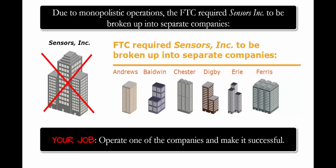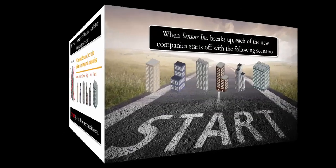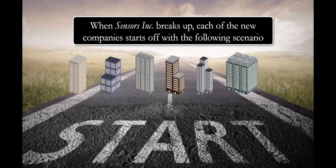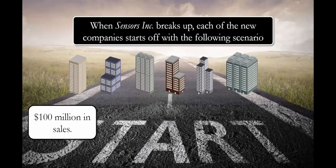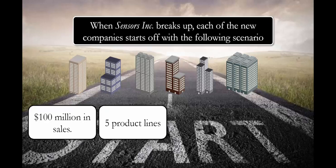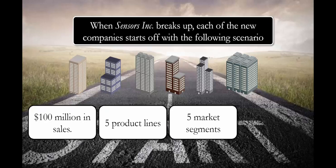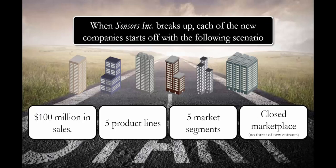It's going to be your job to operate one of these companies and make it successful. When Sensors Inc. breaks up, each of the new companies starts off with: a hundred million dollars in sales, five product lines, five market segments, and a closed marketplace. Since it is a closed marketplace, there is no threat of new entrants, but there is definitely a threat of substitutes — meaning if none of the companies offer products of value, customers will not buy from the industry.